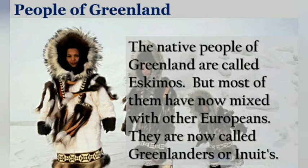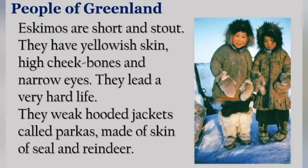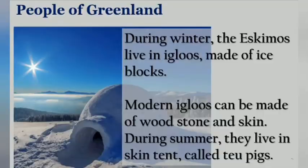The native people of Greenland are called Eskimos, but most have now mixed with other Europeans and are called Greenlanders or Inuits. Eskimos are short and stout, with yellowish skin, high cheekbones, and narrow eyes, and they lead a very hard life. They wear hooded jackets called parkas, made from the skin of seals and reindeer. During winter, Eskimos live in igloos — houses made of ice blocks; modern igloos can be made of wood, stone, or skin. During summer, they live in skin tents called tupiks.